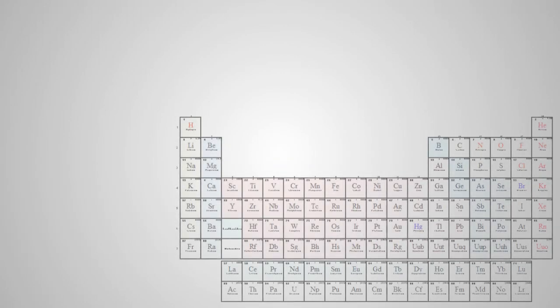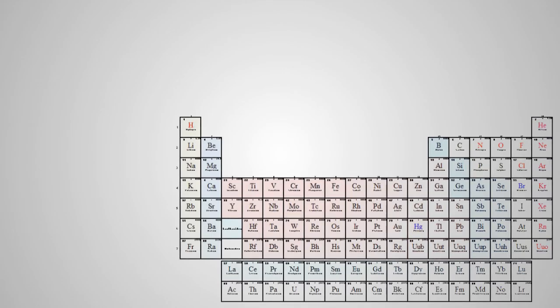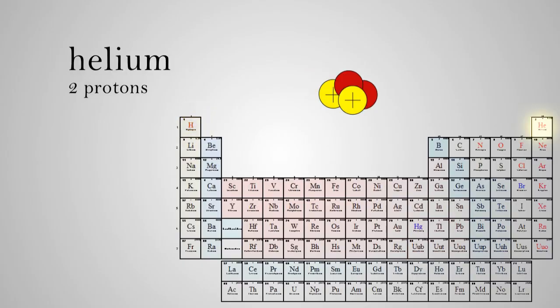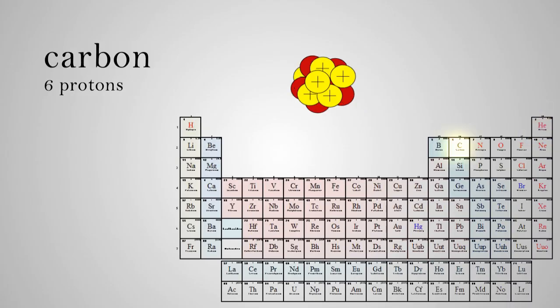As the universe cooled, atoms formed. It all became dark because there were not any stars yet. All the stuff in the universe is made of atoms. There are a little over 100 different types of atoms called elements. Atoms are different because of the number of protons they contain. An atom of hydrogen has one proton, and a helium atom has two protons. An atom of carbon has six protons. We find carbon in coal and in diamonds.